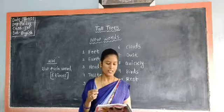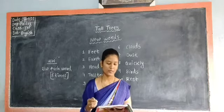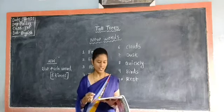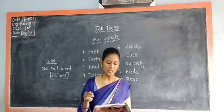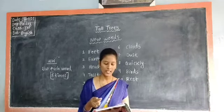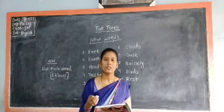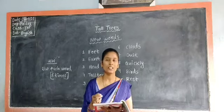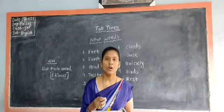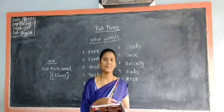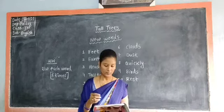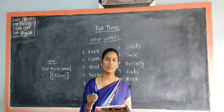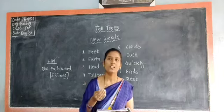When the dusk sends quickly the birds to rest. Dusk means the time after sunset before it is completely dark. I think you have observed a flock of birds moving towards their home in the evening. The home of a bird is called a nest. After sunset, the birds go to their nest to rest. The nest will be on the top of the tall trees.